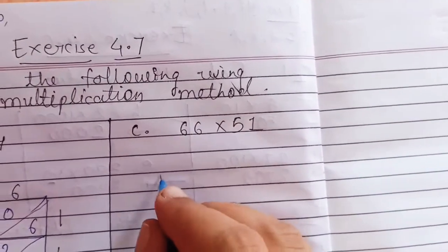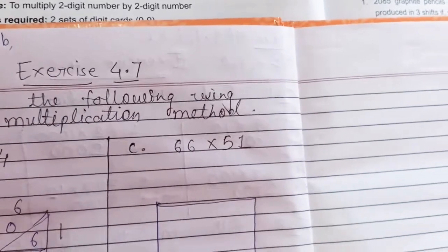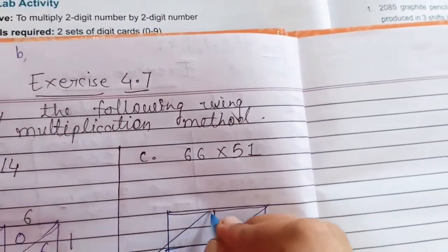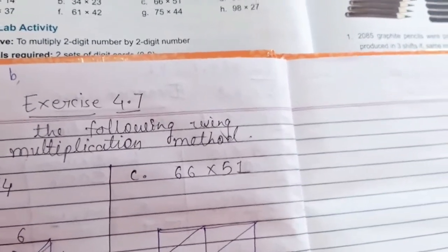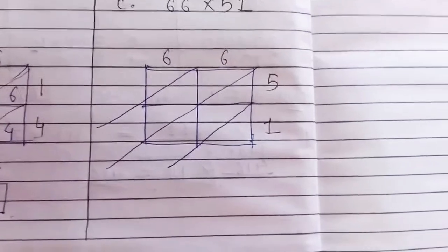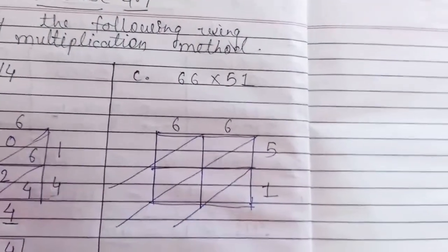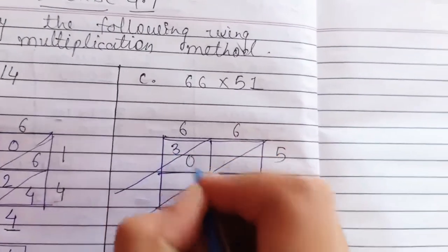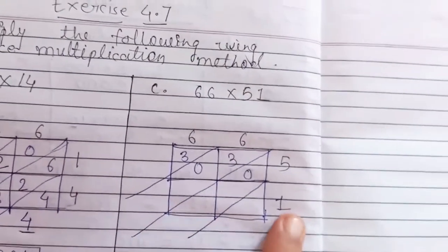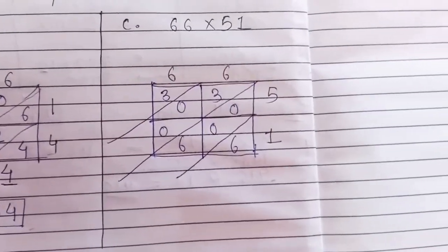Draw one rectangle box and make 4 equal parts. Take the lines to the outer side. It's 66 multiply by 51. Numbers are written: 5 will be multiplied with the two 6's, then 1 will be multiplied with the two 6's. So 5 sixes are 30, and again 6 times 5 is 30. Then 1 multiply by 6: 6 ones are 6, so write 0, 6. Again 1 times 6, write 0 and 6.